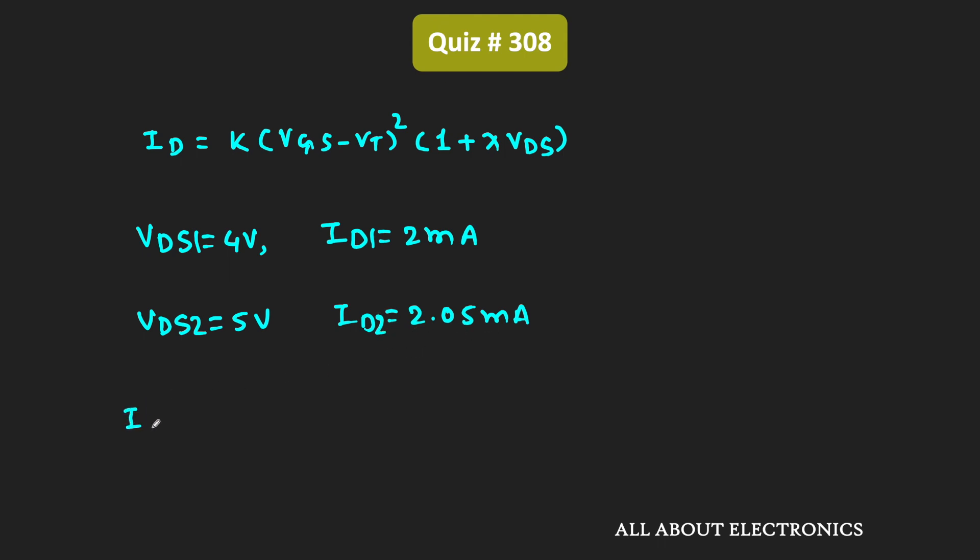So from this we can say that this Id1 is equal to K(Vgs - Vt)²(1 + 4λ). Similarly, this Id2 is equal to K(Vgs - Vt)²(1 + 5λ).